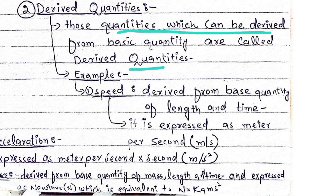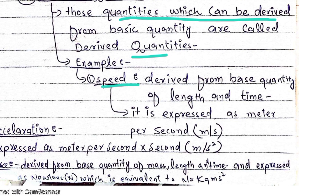For example, speed is a derived quantity. Speed is derived from the base quantities length and time. The unit of speed is meter per second. Meter is the unit of length and second is the unit of time, so speed is derived from these basic physical quantities.